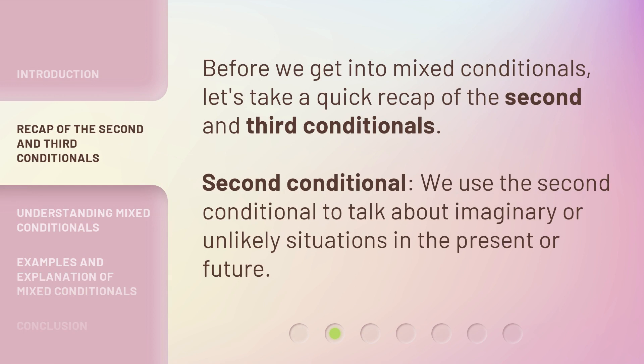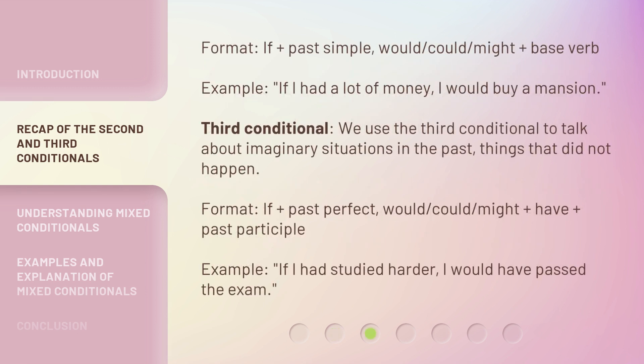Before we get into mixed conditionals, let's take a quick recap of the second and third conditionals. Second conditional: we use the second conditional to talk about imaginary or unlikely situations in the present or future. Format: if plus past simple, would, could, or might plus base verb. Example: If I had a lot of money, I would buy a mansion.